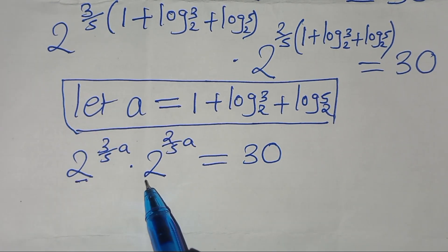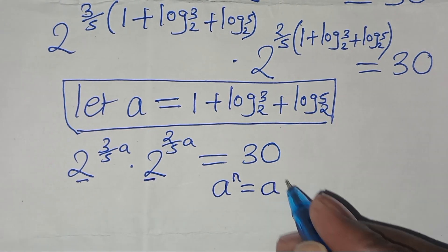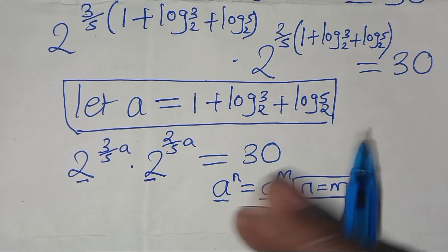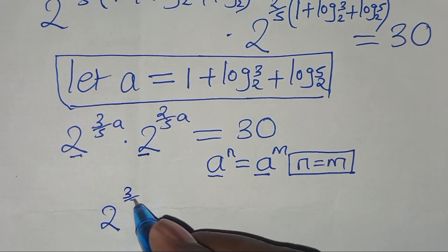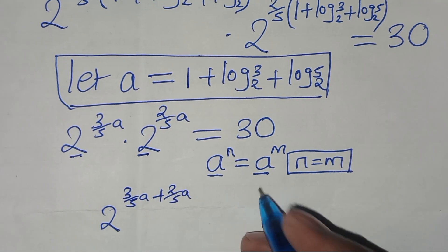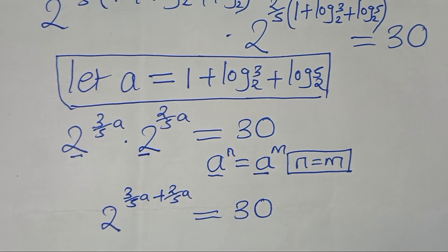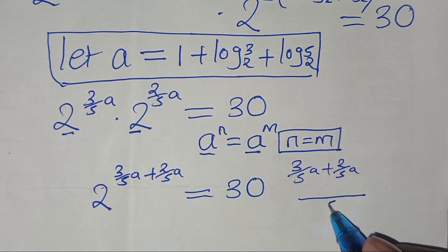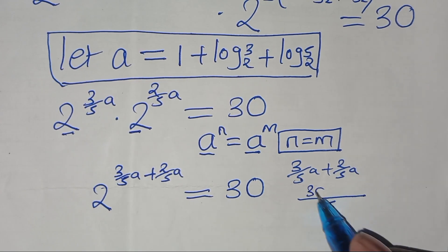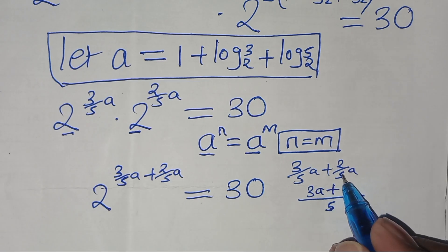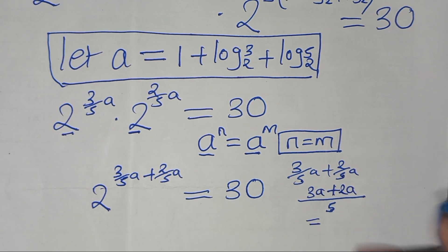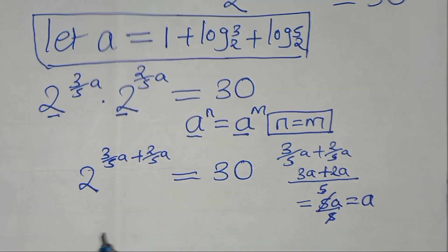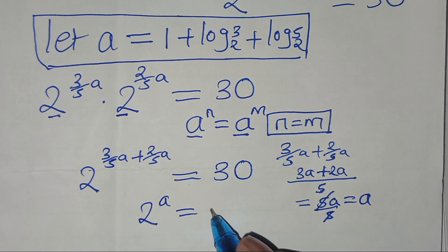Since the bases are the same, we apply the property a to the power n times a to the power m equals a to the power (n plus m). So we get 2 to the power (3a/5 plus 2a/5). The LCM is 5, giving (3a plus 2a) over 5, which equals 5a over 5, which simplifies to a. So we have 2 to the power a, which should equal 30.